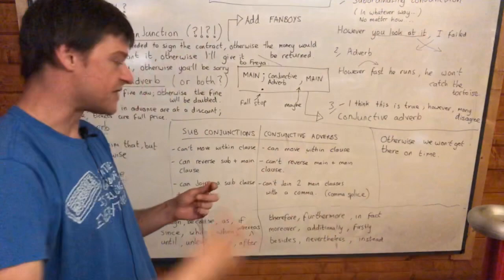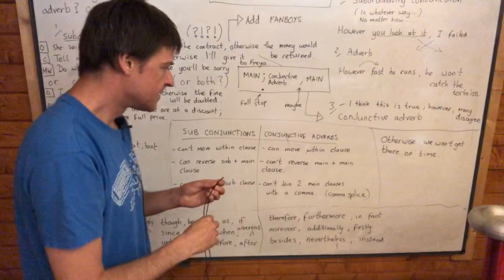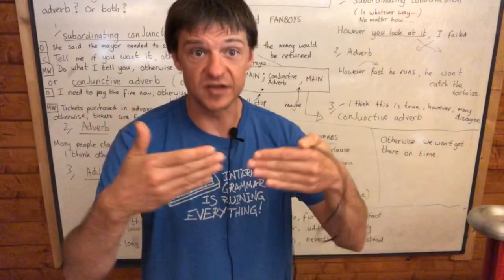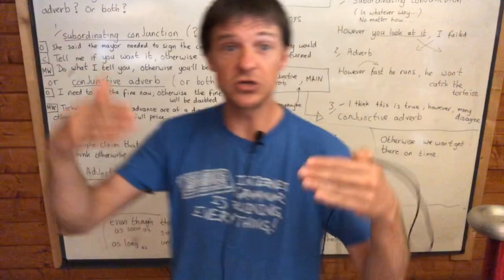Conjunctive adverbs include: additionally, firstly, besides, nevertheless, however. All of these words are conjunctive adverbs, and what you'll notice is that when they're joining two clauses together, you can't reverse them. With a subordinating conjunction you can reverse the clauses, but with a conjunctive adverb you can't.